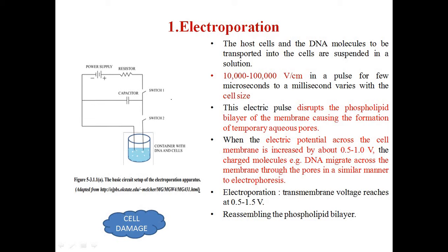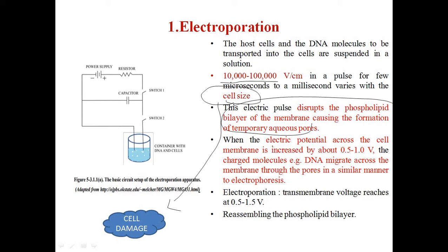Electroporation is a physical vectorless gene transfer method where electric current is applied at 10,000 to 1 lakh volts per centimeter for a few microseconds or milliseconds. This voltage varies with cell size and may damage the cell. The electric field disturbs the phospholipid bilayer of the membrane and forms aqueous pores. When the electric potential across the membrane is increased by about 0.5 to 1 volt, the charged DNA molecules migrate across the membrane through the pores, similar to electrophoresis, and afterwards the phospholipid bilayer reassembles.